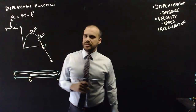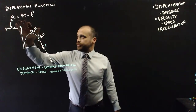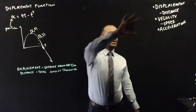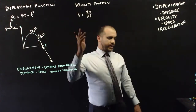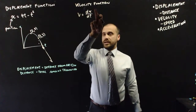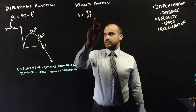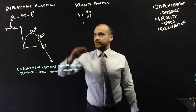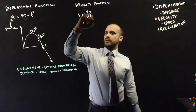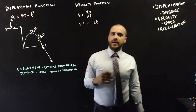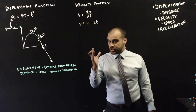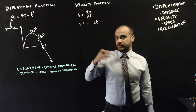If we take the derivative of our displacement function, we'll have a velocity function. Velocity equals the derivative of x with respect to time. In this specific example, it's 4 minus 2t, and that's our velocity function. It tells us the velocity of our object at any given time.